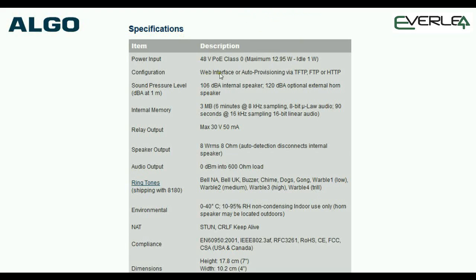Configuration and web interface — you can auto-provision. Internal memory is 3MB for recordings, and you can record your own announcements, ringtones, etc., and load them into the unit. The relay is 30 volts, 50 milliamps. It talks about the default ringtones loaded into the unit, what environment it should be in (non-condensing — don't put it in the rain, it's not waterproof). If you want a waterproof unit of this type, you're looking at the 8186.